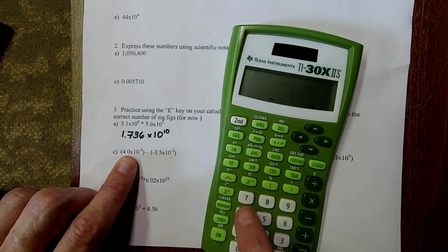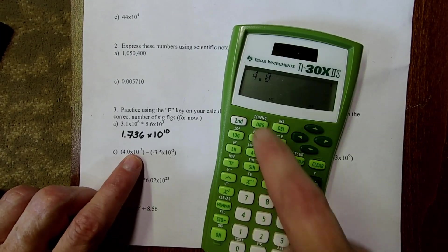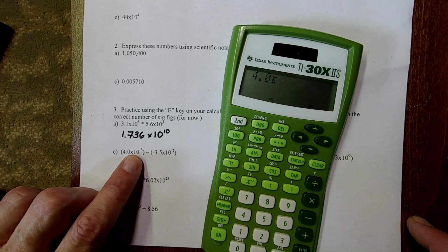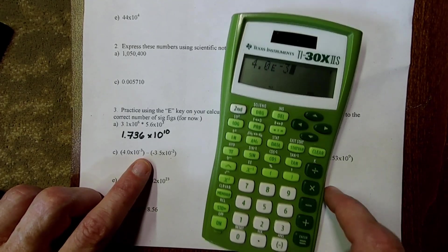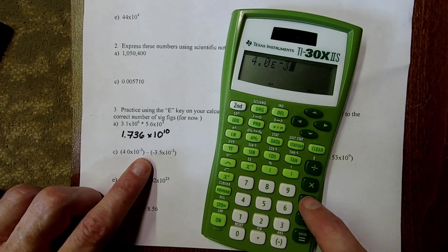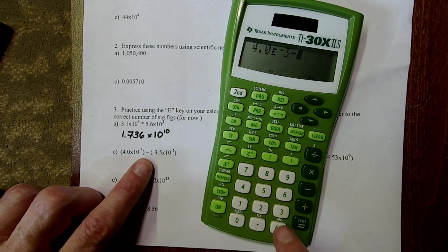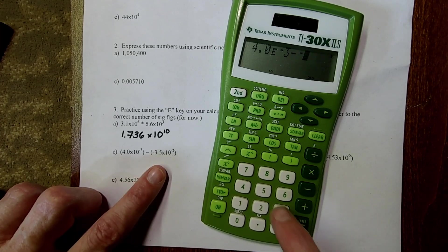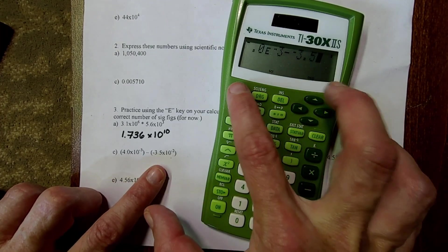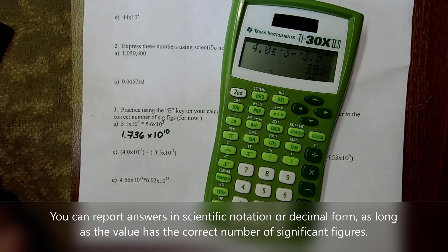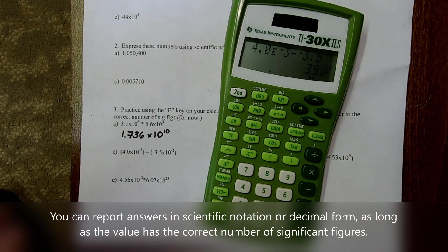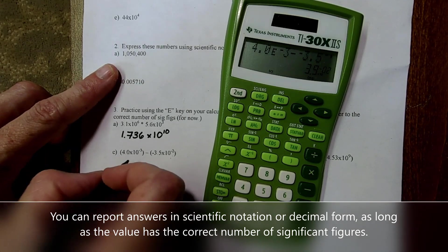So let's do letter C. 4.0. And I'll do 2nd, E, negative 3. The minus that's an operation is over here. So I'll do minus. And then the negative is down here. Negative 3.5, 2nd, E, negative 2. And when I do that, I get 3.9 times 10 to the negative 2.